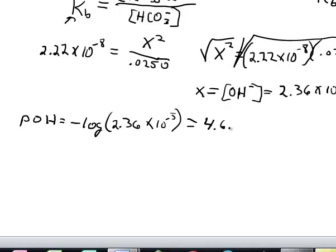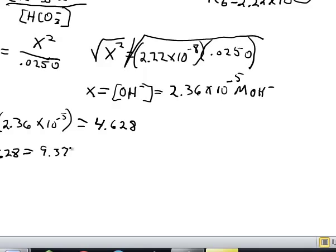Many people get excited seeing their answer match a multiple choice option, but remember: we're calculating the pH of a base, which shouldn't be less than 7. This is pOH. We get pH by subtracting pOH from pKw. At 25°C, pKw = 14, so pH = 14 - 4.628 = 9.372.